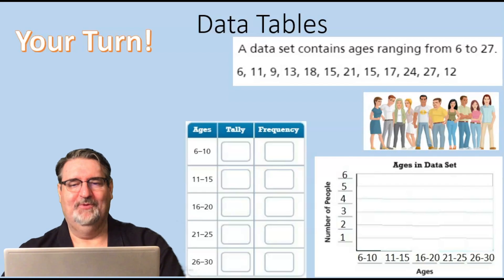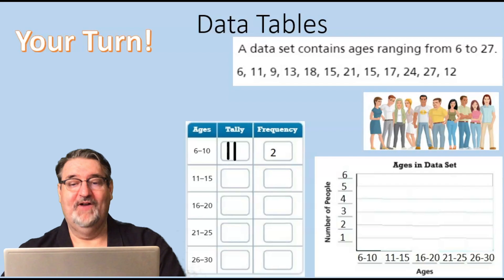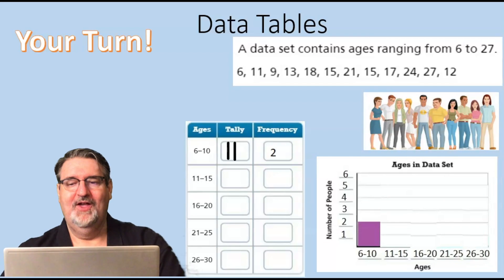All right, in the data table, for ages 6 to 10, we found 2. So we make two tally marks, and for the frequency we write 2. On the graph, we show that there's 2.